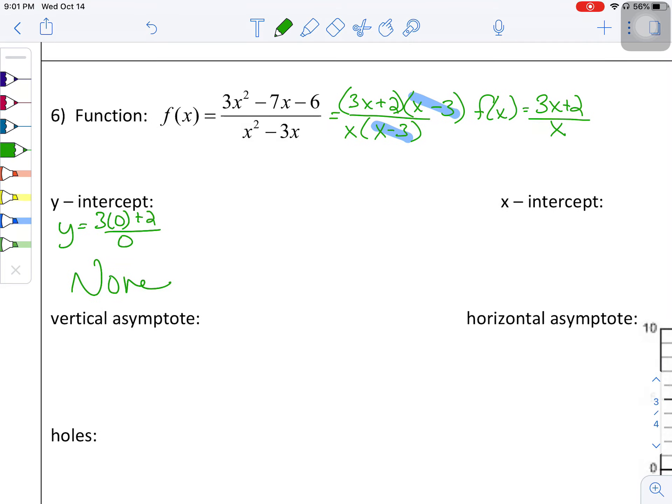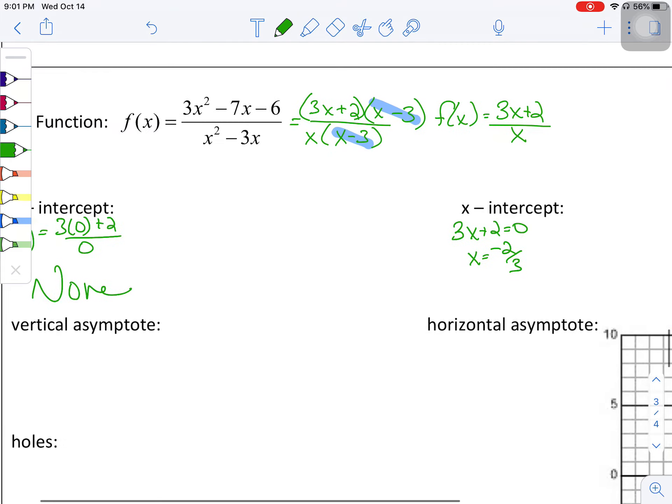We're going to take that x-intercept, set the numerator equal to zero. So x is equal to negative two-thirds. So that gives me the ordered pair, negative two-thirds zero.